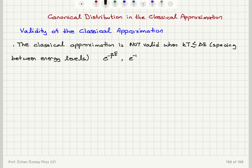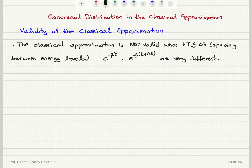What happens is that the Boltzmann factor e to the minus beta E and e to the minus beta times (E plus delta E) — where beta is 1 over kT — are going to be very different. Therefore we cannot treat this energy as a continuous variable anymore.